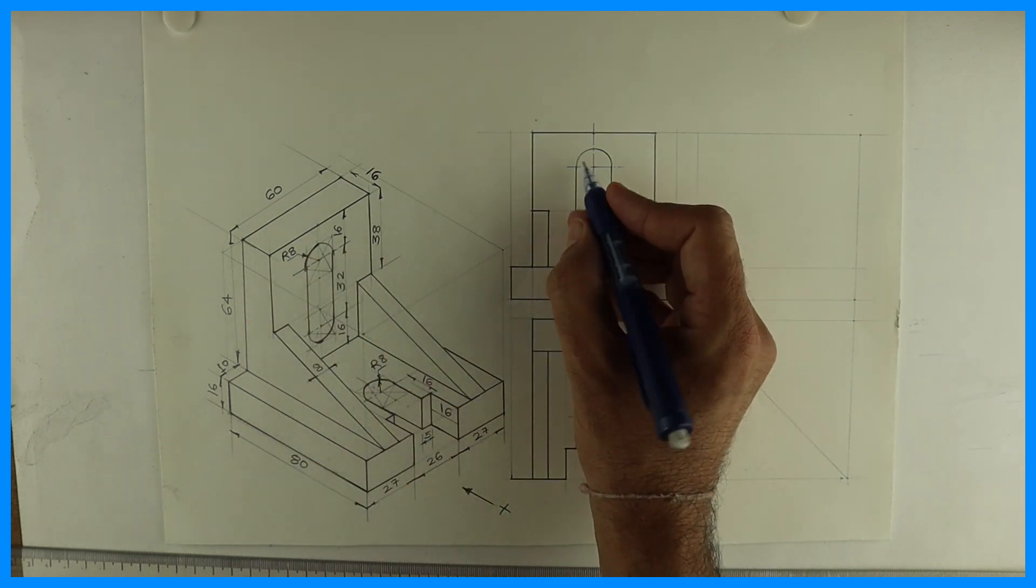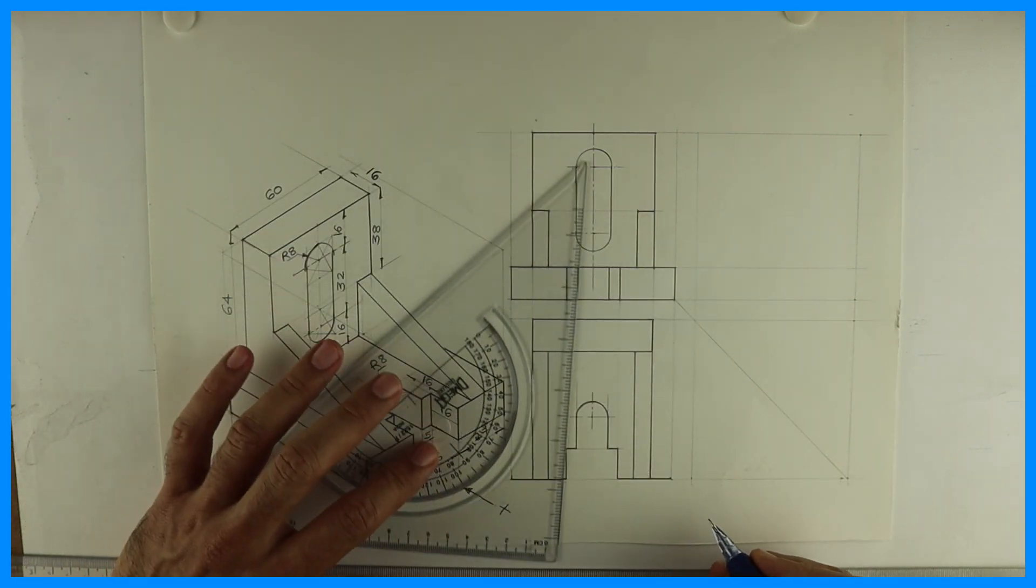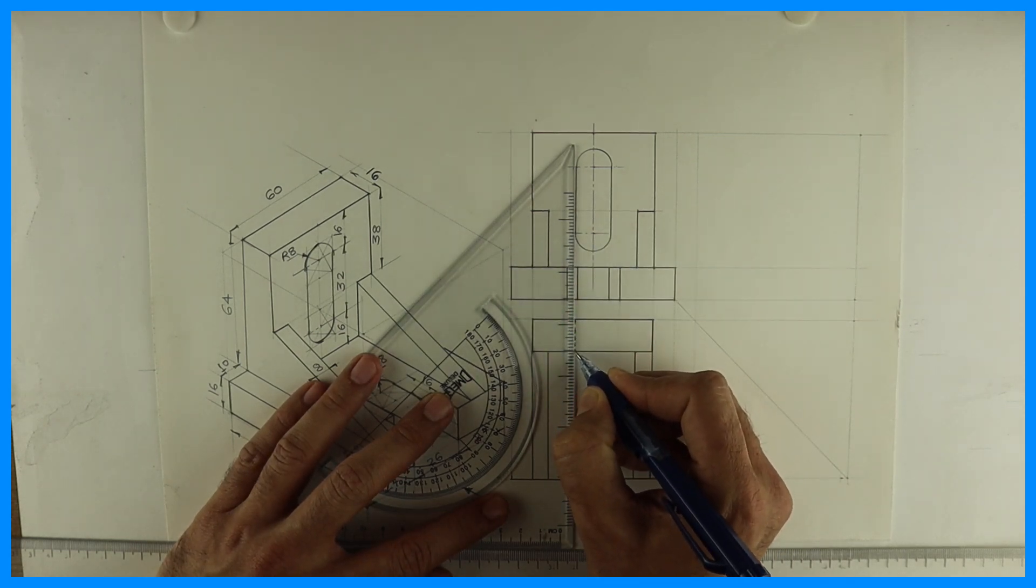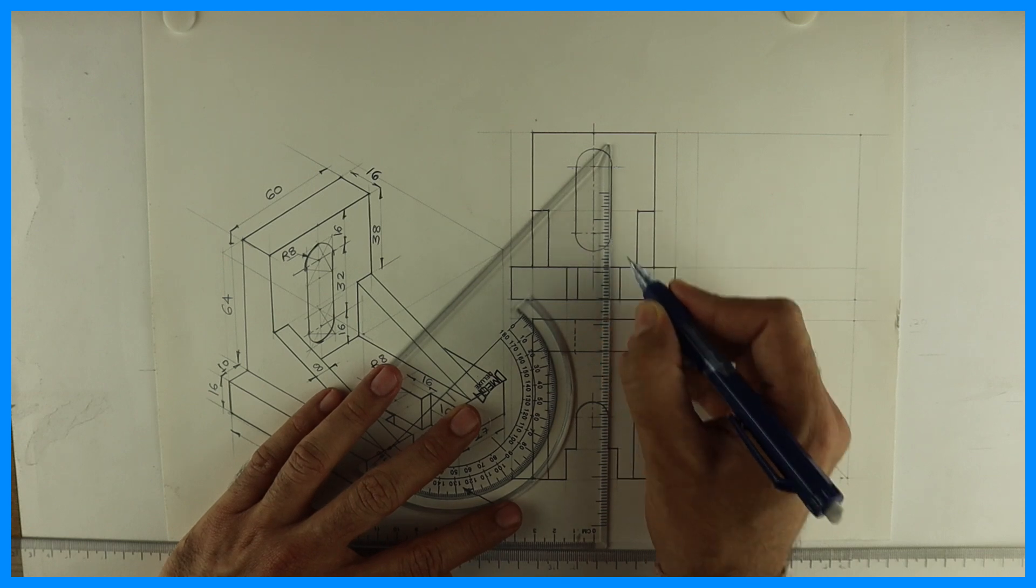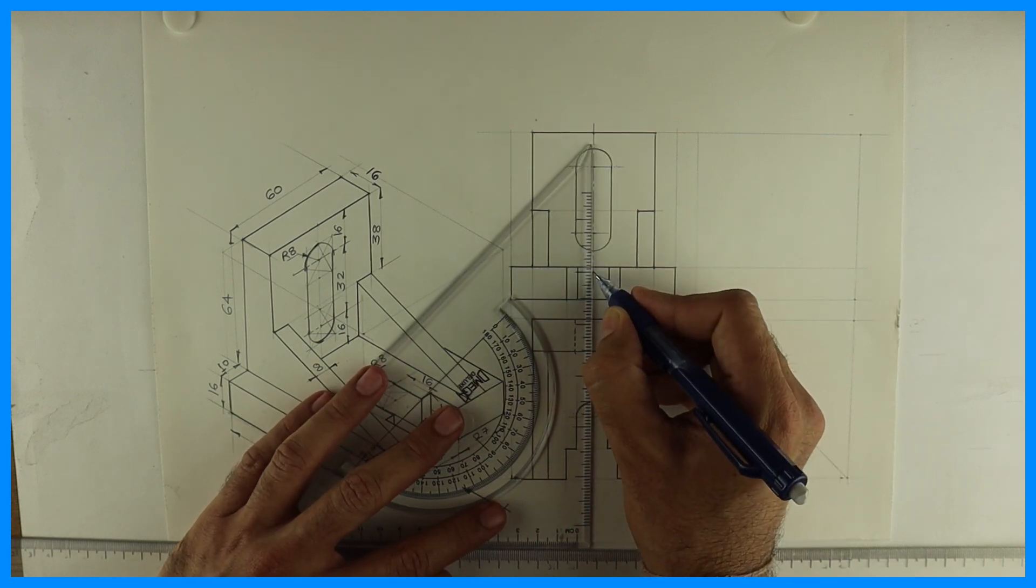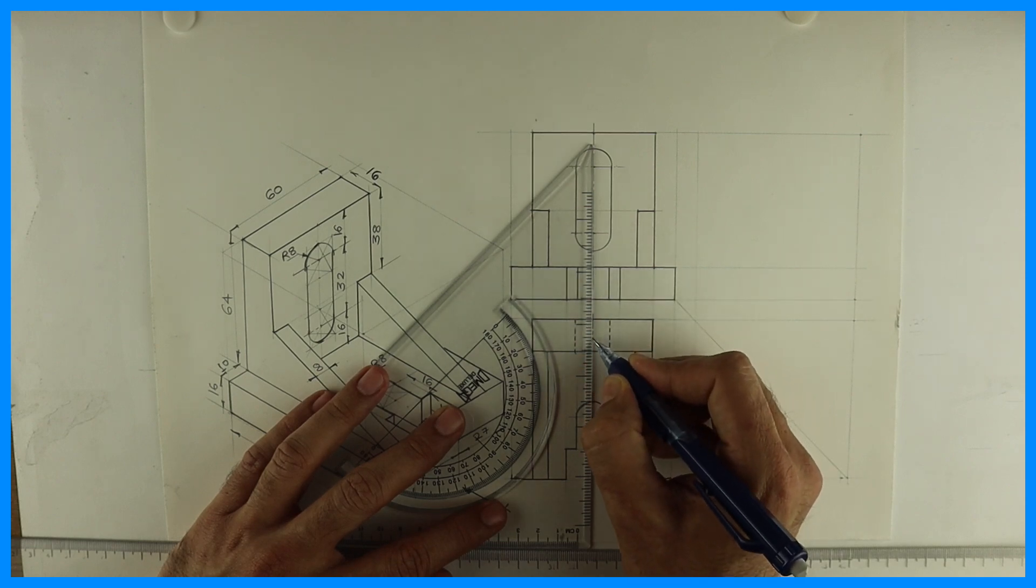Now this part, so this is extreme left and right point. So that we will draw dotted, but it will come only in this 16mm width. Because it is only there, it is not full. We can draw center line also.